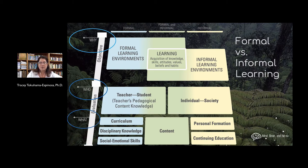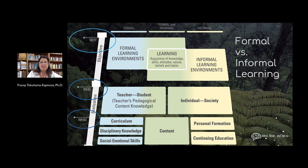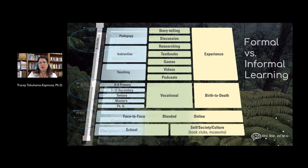What we do in formalized settings is that we tend to use a curriculum structure, dividing things by math class, English class, and science, for example. And most recently, schools have taken on the role of guiding social-emotional skills as well. But what happens in informal contexts is driven by an individual's personal interests and formation, or it extends what they might have already learned within the formal context of schools.